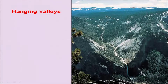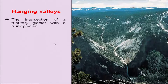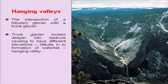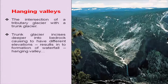Hanging valleys: if the glacial mass which used to cover this area retreats, then it will allow the river to flow, and higher elevated hanging valleys are formed. At the intersection of a tributary glacier with a trunk glacier — the trunk glacier incises deeper into the bedrock — causing different elevations and resulting in the formation of waterfalls. You have a hanging valley and then a waterfall which has been developed on the hanging valley side.